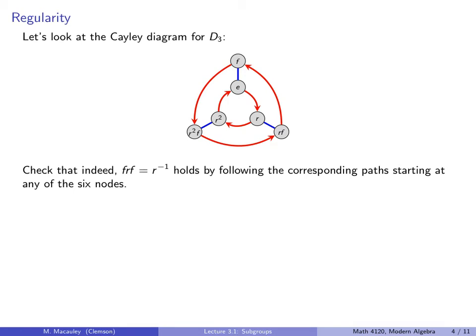So let's look at the Cayley diagram for D3. We can check that indeed this relation holds by following the corresponding path starting at any six nodes. So this is F, that's blue, red, blue equals backwards red. So let's pick a node and go blue, red, blue is the same thing as going backwards red.